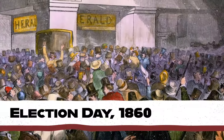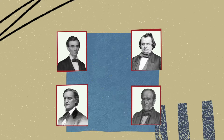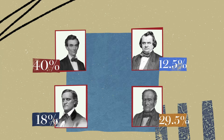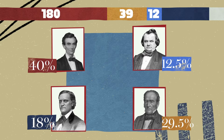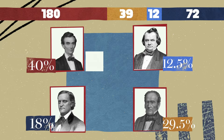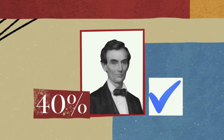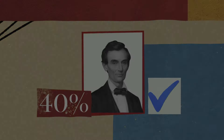On election day, voters headed to the polls across the nation and waited with bated breath for the results. In a historic upset, Lincoln secured nearly 40 percent of the popular vote and 180 electoral votes, far exceeding the requirements for victory. Yet, despite his triumph, dark clouds loomed ahead.